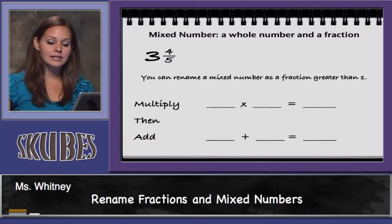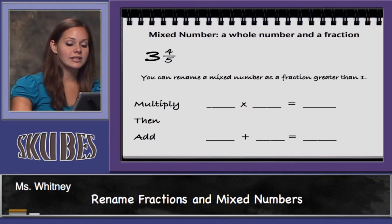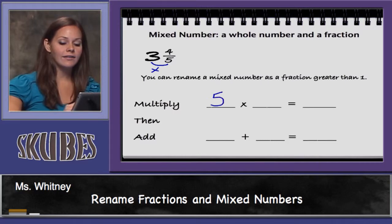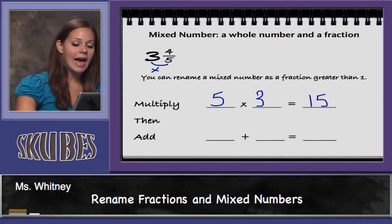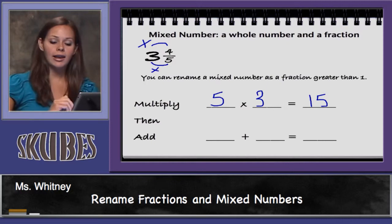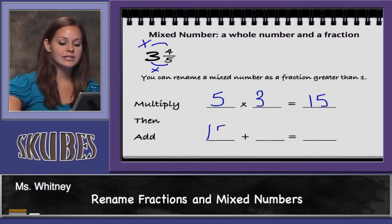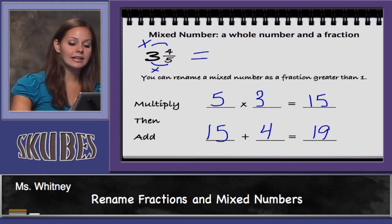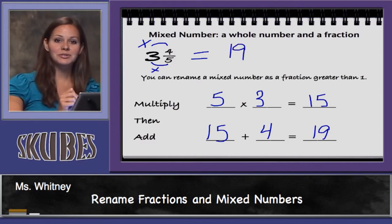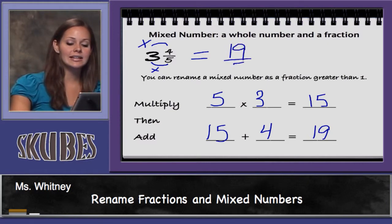You can rename a mixed number as a fraction greater than one. First, you have to multiply the denominator times the whole number. Five times three is equal to fifteen. Next, you have to add your numerator to the product. So, fifteen plus four equals nineteen. Now, we are going to put nineteen over our original denominator, nineteen-fifths.